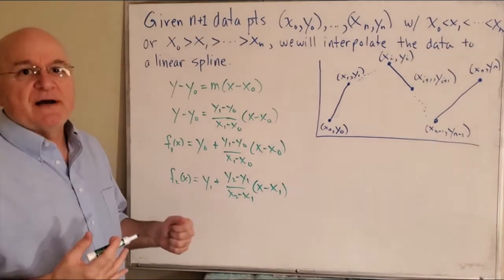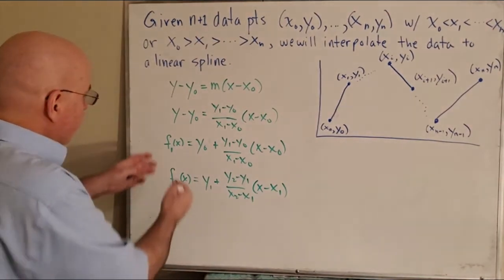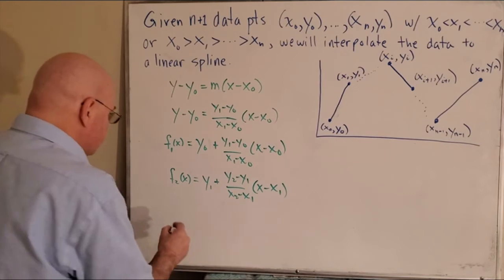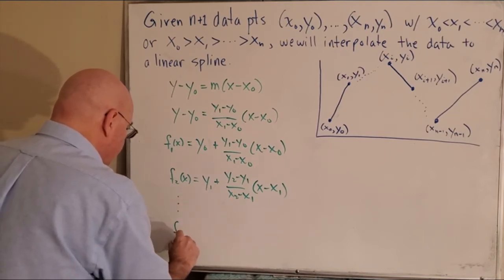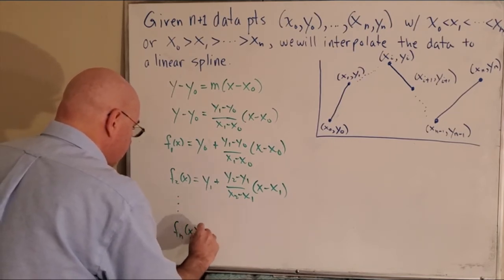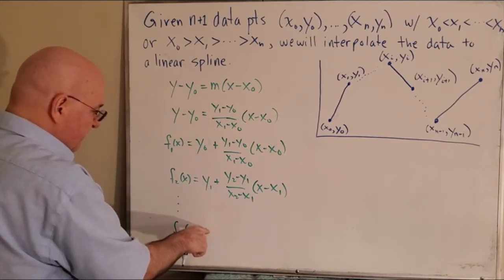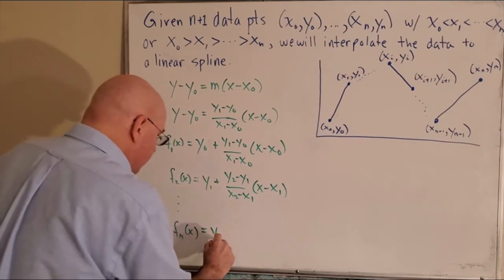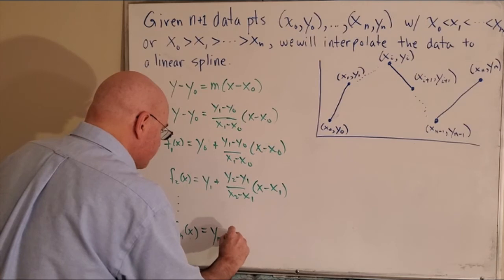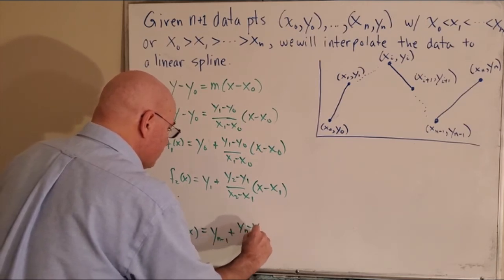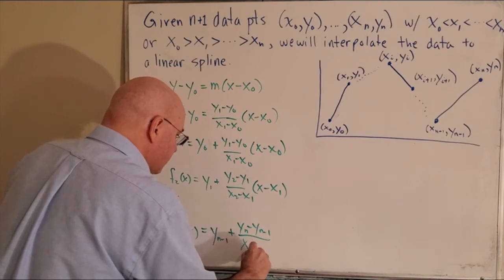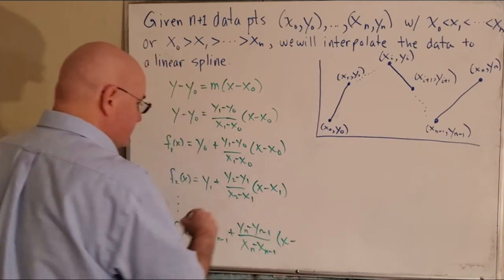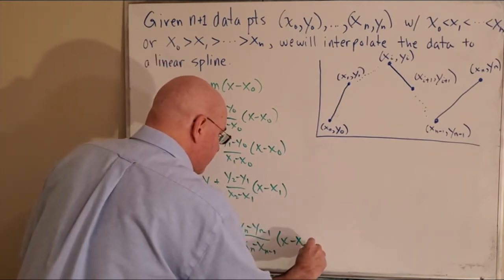Now, we're defining a piecewise function. Would I put all of these f1s all the way down to fn? Or maybe I will, yeah, I'll just go down to fn. fn of x is going to be, what's this y value going to be? Let's see, it's one less than the index there, so it's going to be n minus 1. Plus yn minus yn minus 1 over xn minus xn minus 1 times x minus xn minus 1.